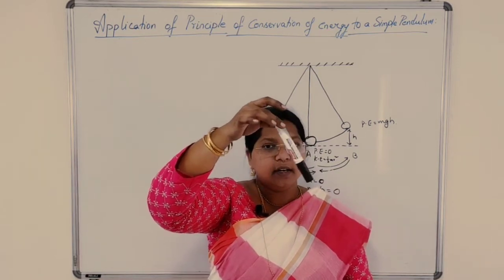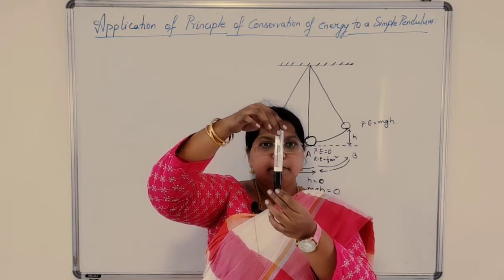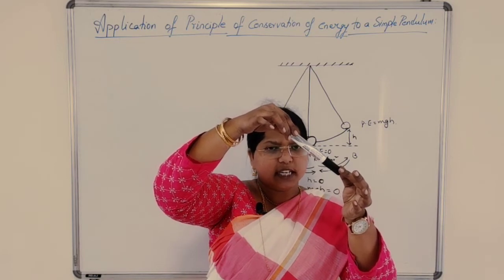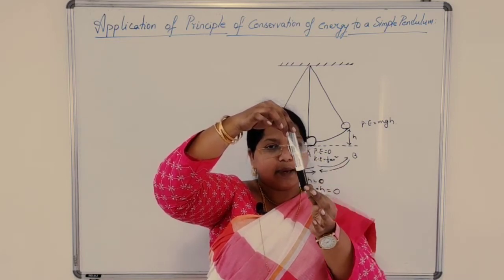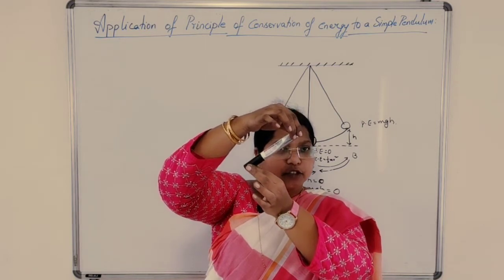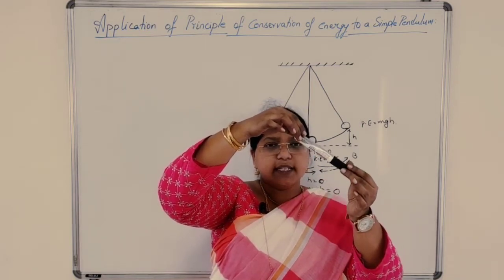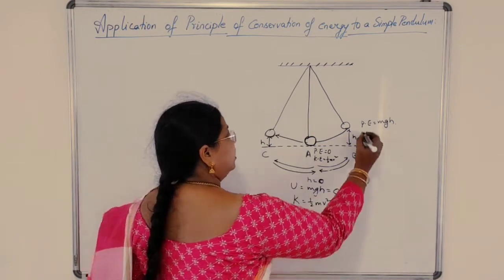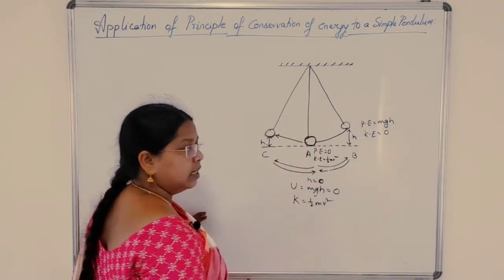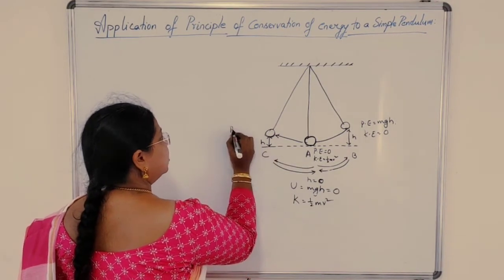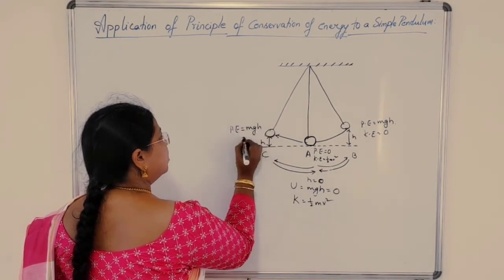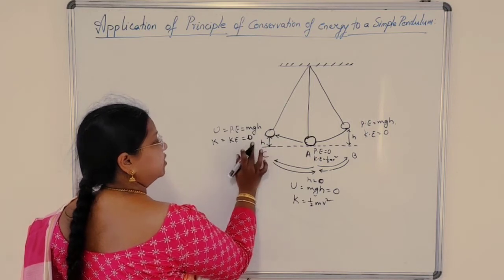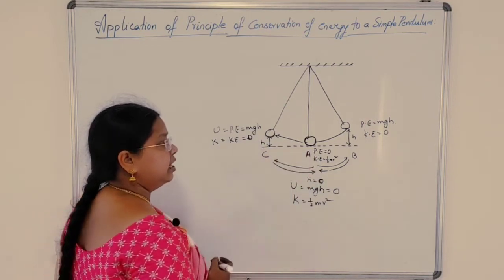When it moves from the mean position to the extreme position, it stops there momentarily for a fraction of a second and then comes back. Again it stops for a fraction of a second and comes back. As it stops at the extreme positions, its velocity is 0, so kinetic energy is 0. At the extreme position, potential energy equals MgH and kinetic energy equals 0. At the mean position, potential energy is 0.